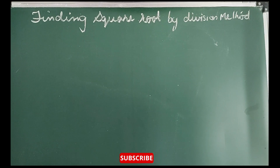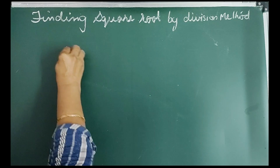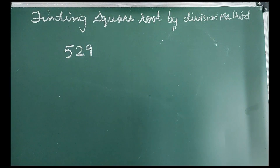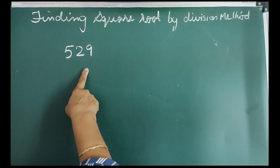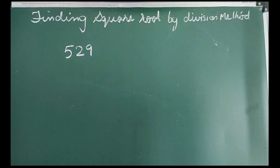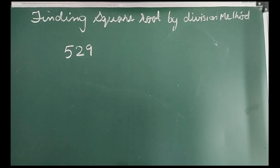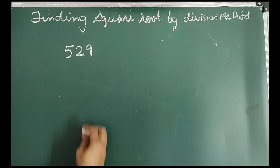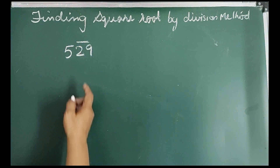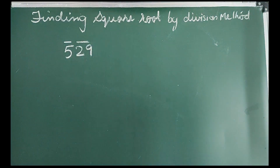Let us find the square root of 529 by division method. To find the square root by division method, we have to follow the following steps. First step is place a bar over every pair of digits starting from the digit at one's place. If the number of digits is odd, then the leftmost single digit will have a bar. Thus, we have 29 having a bar and 5 also having a bar.